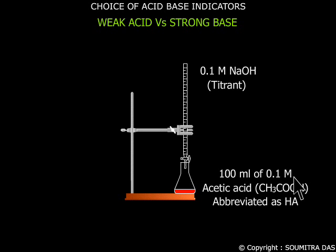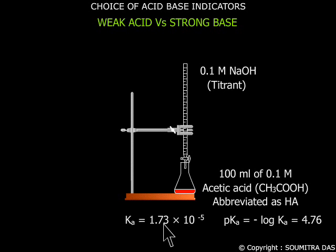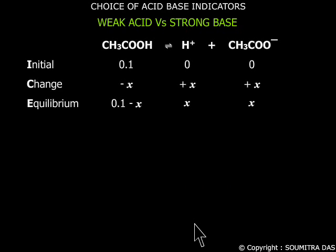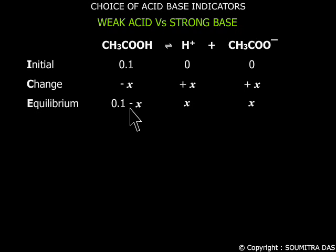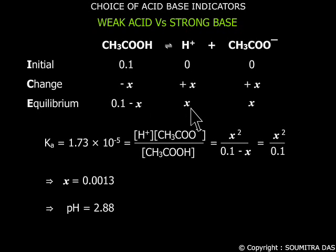100 ml of 0.1 molar acetic acid having a dissociation constant equal to 1.73 × 10⁻⁵. Here acetic acid ionizes like this. The initial moles per liter is this — that is before dissociation. After dissociation the moles per liter is this. Here x is neglected because x is very much less than 0.1, and x, the concentration of H+ ions, is calculated to be 0.0013, which corresponds to a pH equal to 0.88.